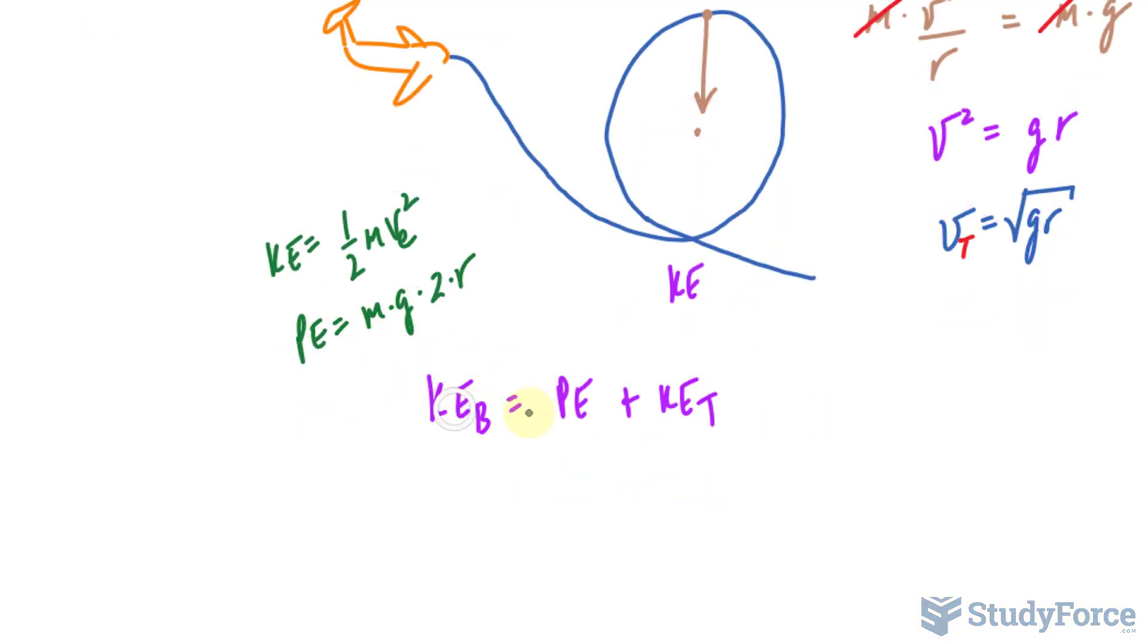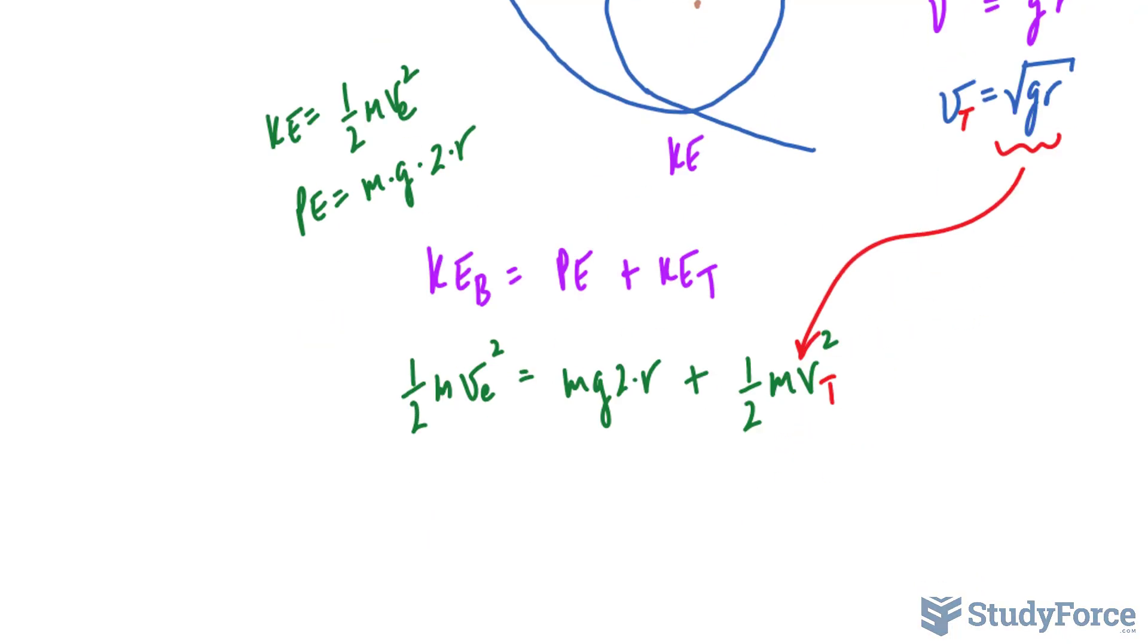So we're placing what we know into this generic formula. We have half times the mass, the entry speed, raised to the power of two, is equal to the potential energy represented by this expression, plus the kinetic energy at the top, we'll use the same formula, but instead I'll write down v at the top, raised to the power of two. And just to be consistent, let's use capital T, because I'll be replacing this expression into there.